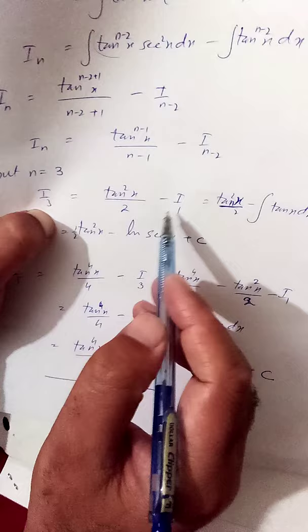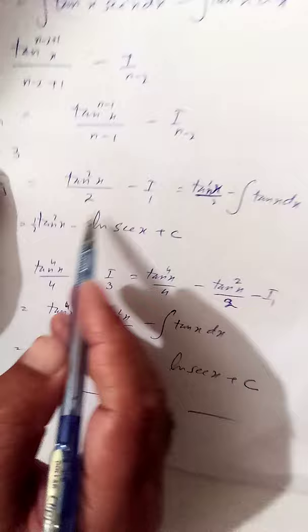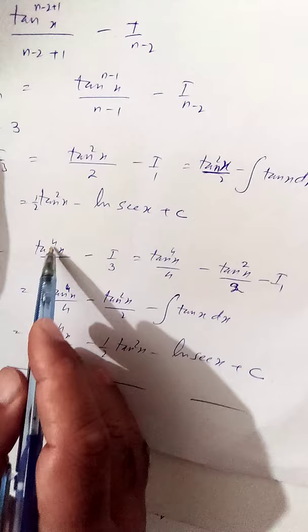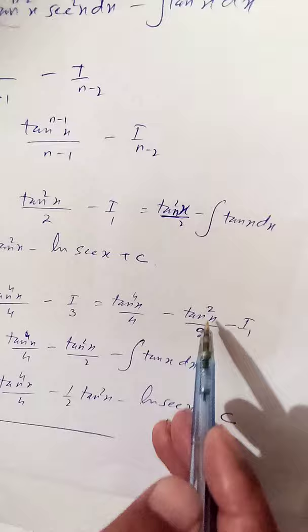This can further be written as: tan²x divided by 2 minus ln|secx| plus constant of integration. Here, putting n = 5 to apply the reduction formula, we get tan⁴x over 4 minus I₃, which can be further integrated using I₃.